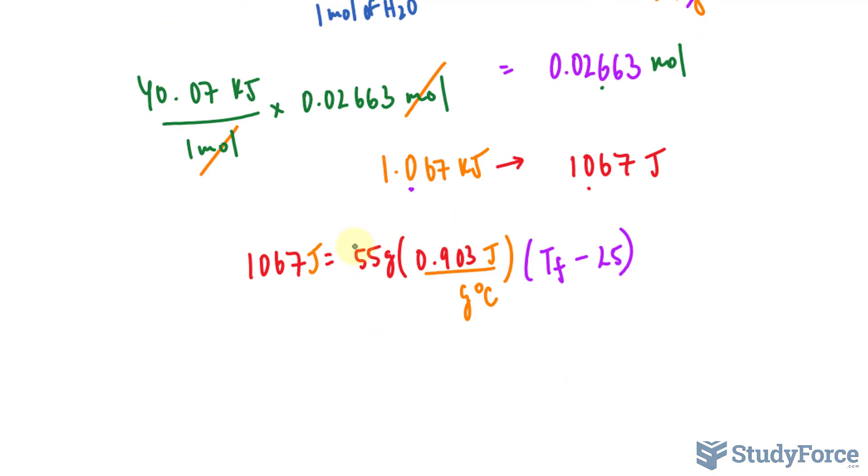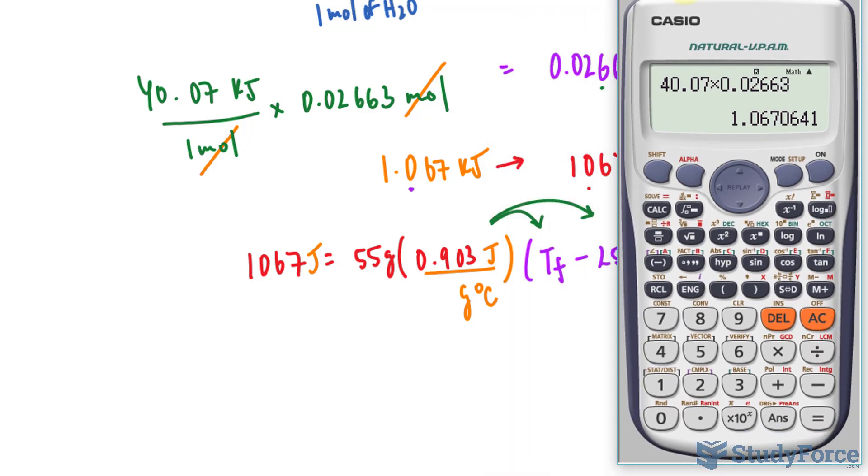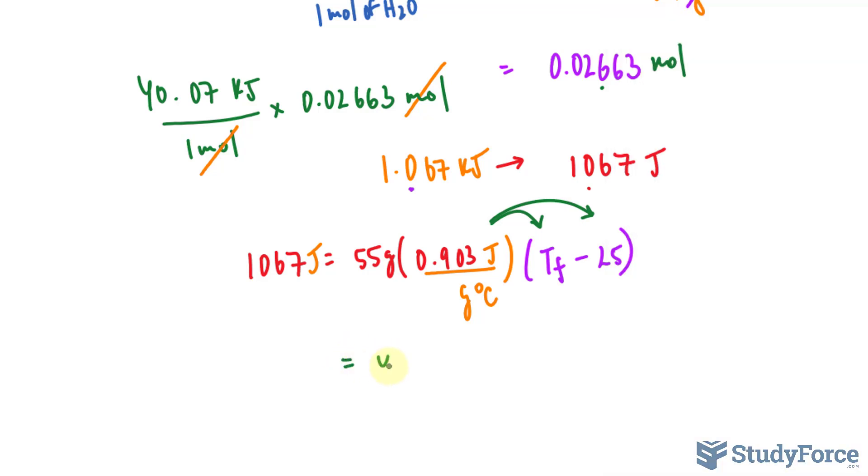Notice that we have a factor on the outside and two terms on the inside of these parentheses. So we'll need to multiply this in - it's called expanding. And we need to solve for T sub f. Let's use our calculator to make things a little easy for us. 55 times 0.903. Remember, this should be two significant figures, but I'll write down everything: 49.665.